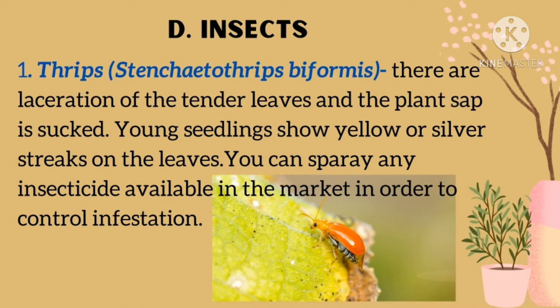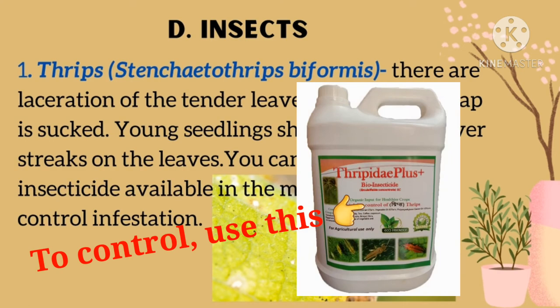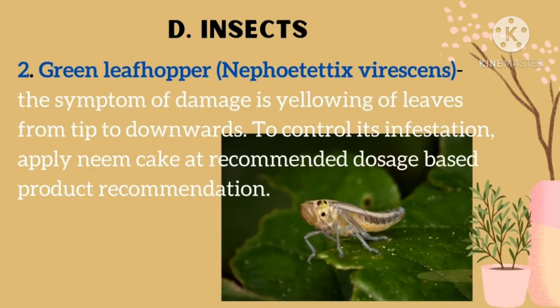Next are insects. In this module, we will identify certain types of insects that damage seedlings. First is thrips. You can tell if a plant was attacked by thrips if the leaves turn pale, splotchy, and silvery, then die. Injured plants are twisted, discolored, and scarred. Use insecticide available in the market, like Trippidae Plus. Next is the green leaf hopper. This pest spreads virus diseases like tungro, yellow dwarf, yellow orange leaf, and transitory yellowing diseases. It feeds by extracting plant sap with their needle-shaped mouthparts.